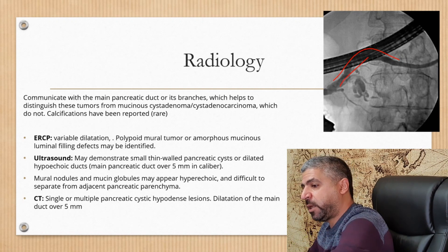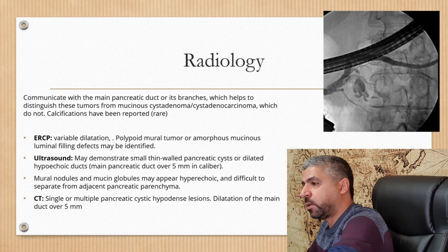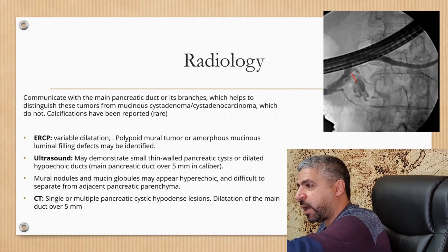Rarely, IPMN may show calcific foci — it has been reported but is very rare. On ERCP, you will see a dilated pancreatic duct more than 5 mm, and you might see a polypoidal lesion filling the main or side branches, with the side branches forming what's called a 'bunch of grapes.' On ultrasound, it demonstrates small thin-walled pancreatic cysts or dilated hypoechoic ducts, and the main pancreatic duct is more than 5 mm in caliber. You can sometimes see a mural nodule or globules of mucin that appear hyperechoic.